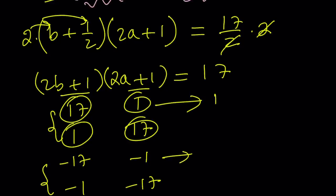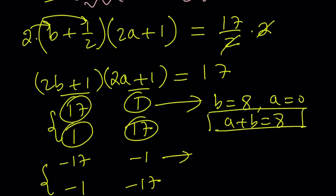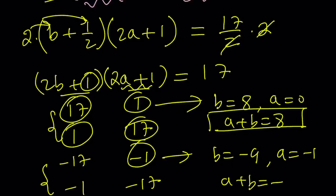So from here, I get b equals 8. And from the second one, I get a equals 0, which means a plus b is equal to 8. That's one of the values. And from the second one, from the negatives, I get if 2b plus 1 is equal to negative 17, that means 2b is equal to negative 18, which means b is equal to negative 9. And 2a plus 1 equals negative 1 means a is equal to negative 1. And their sum is going to be negative 10 in this case.